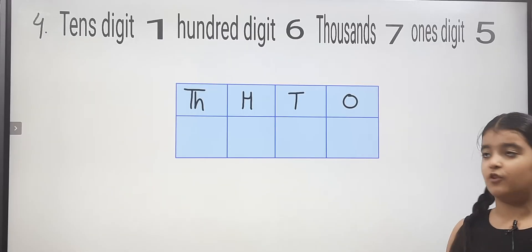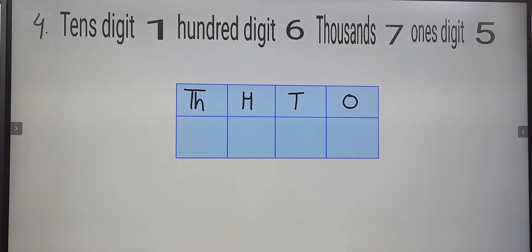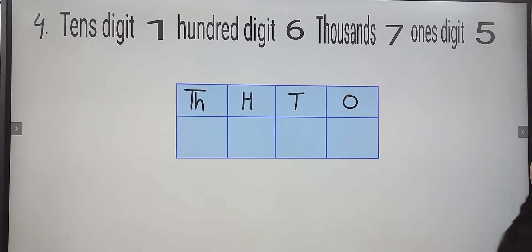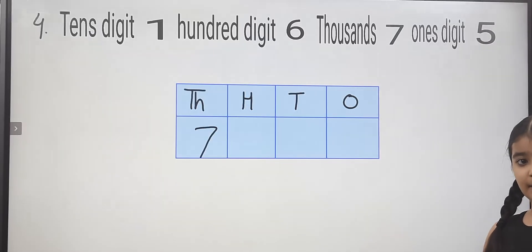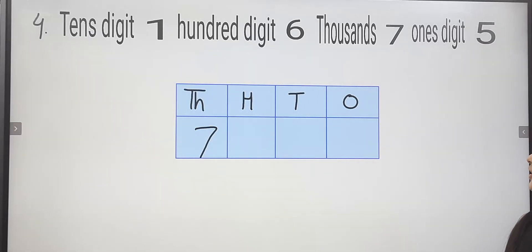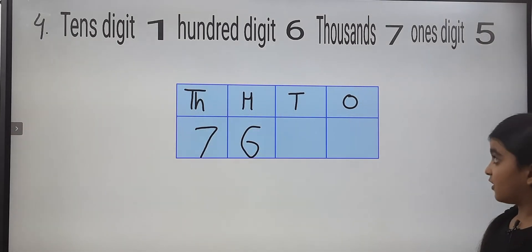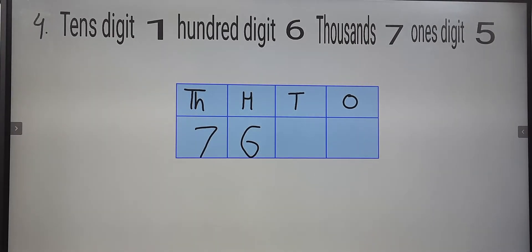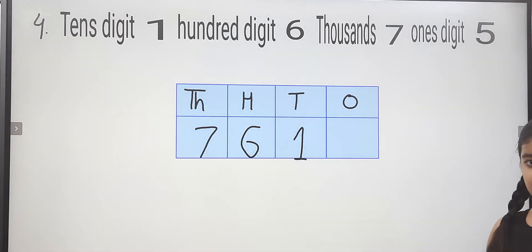Next, question number four: tens digit is one, hundreds digit is six, thousands digit is seven, ones digit is five. The first place is Thousands and thousands digit is seven, so here we will write seven. Hundreds is six, so here we will write six. Tens is one, so here we will write one.